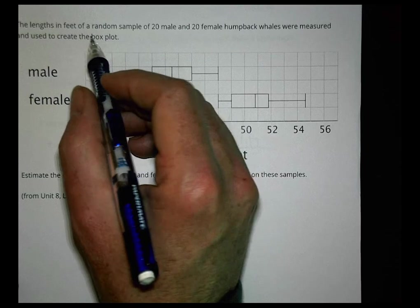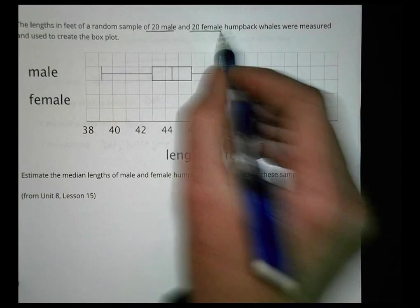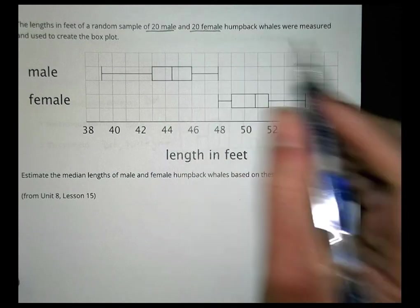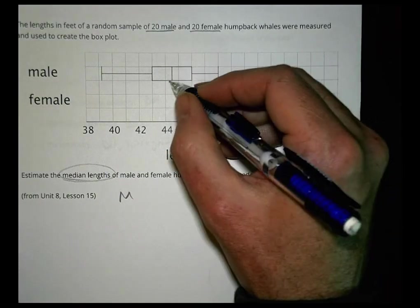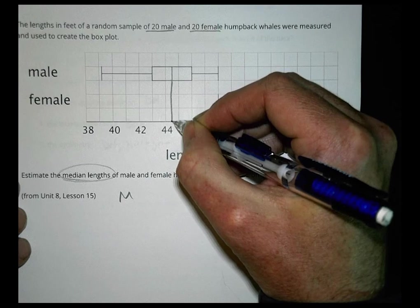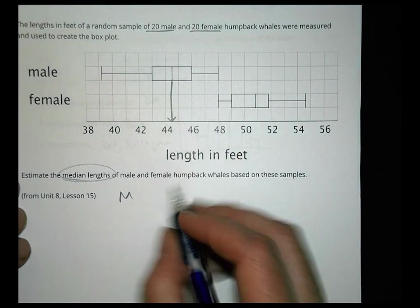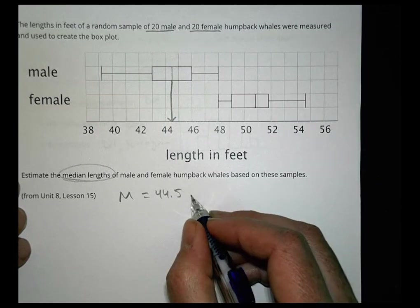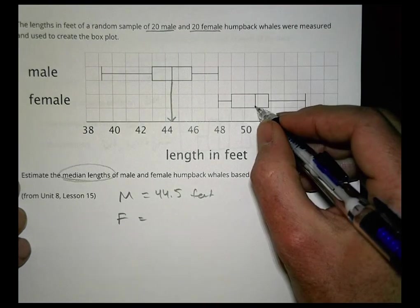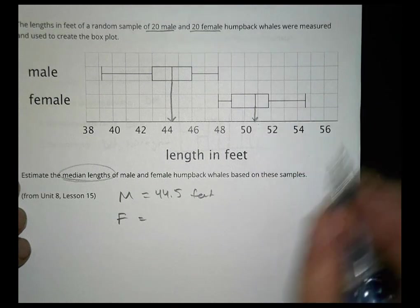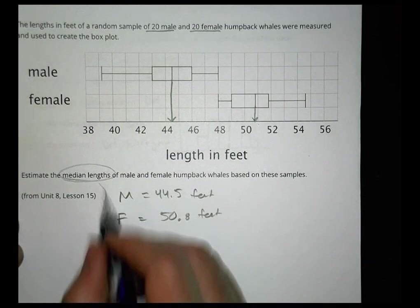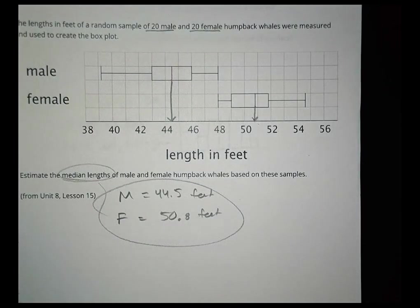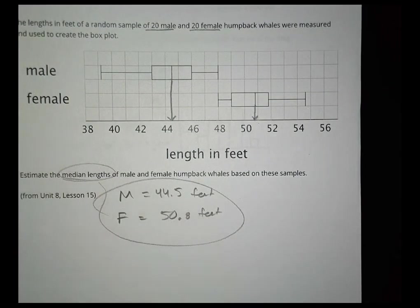Question 4: Random samples of 20 male and 20 female humpback whales were measured and displayed in box plots. Estimating from the plots: the male median is about 44.5 feet and the female median is about 50.8 feet. That wraps up today's lesson and the entire school year — thanks for watching, and hope to see you in Math 8. Good luck!